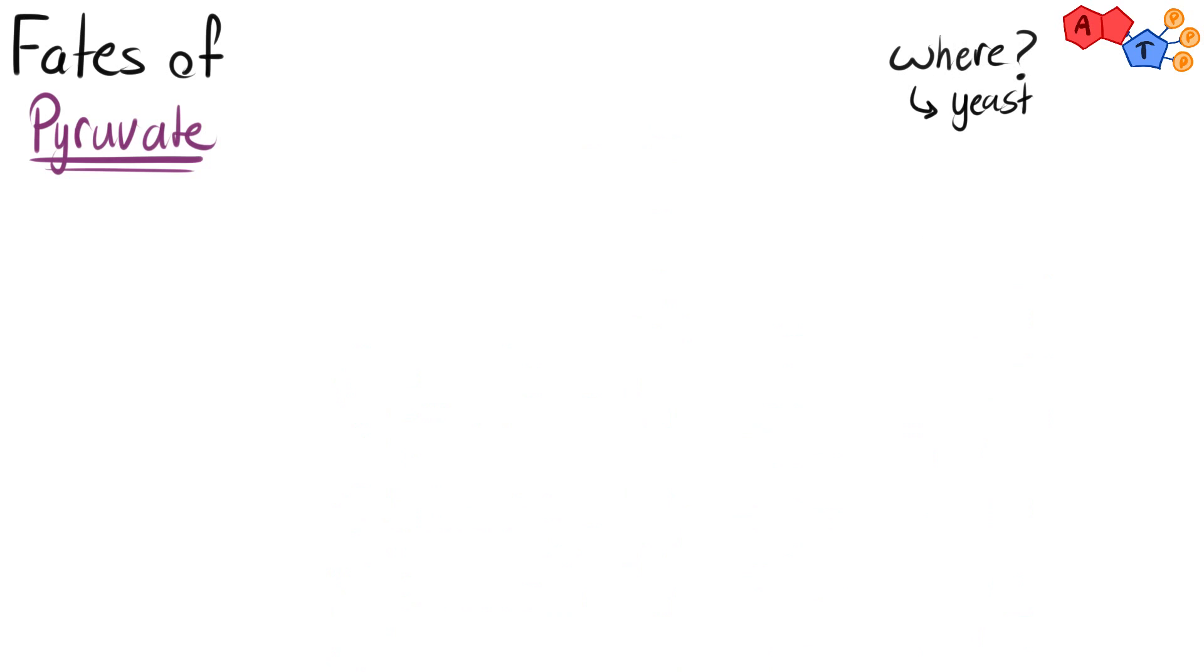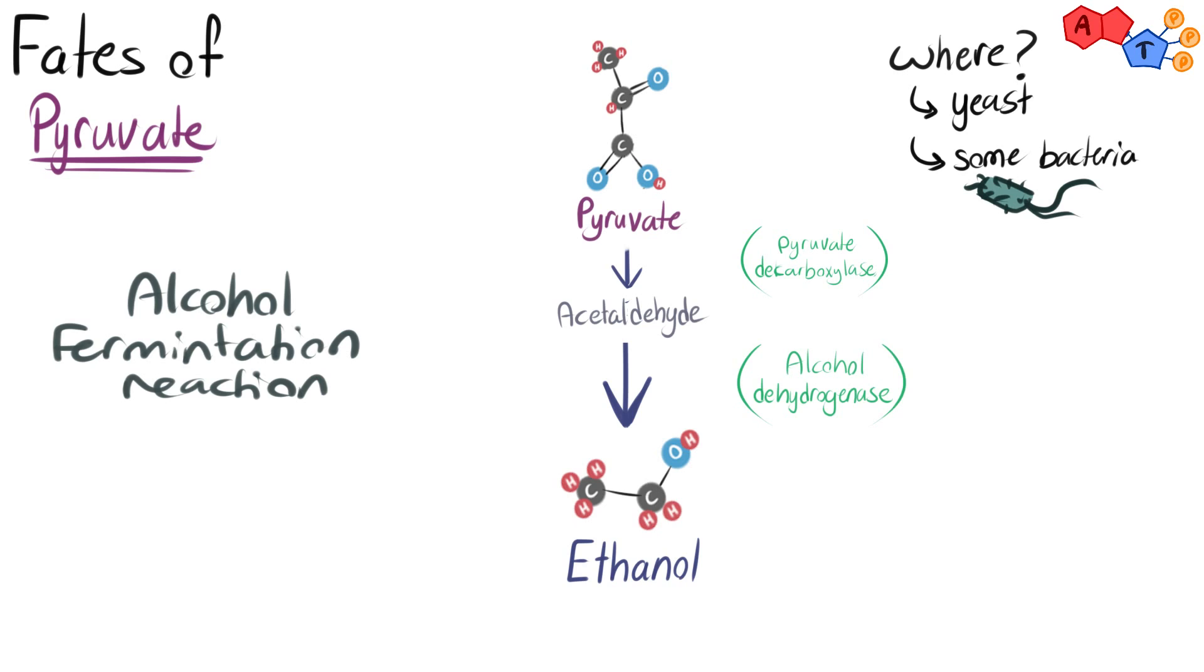Three, in yeast and some bacteria, pyruvate is converted into ethanol in an alcohol fermentation reaction. This is an anaerobic reaction and produces carbon dioxide as a byproduct.